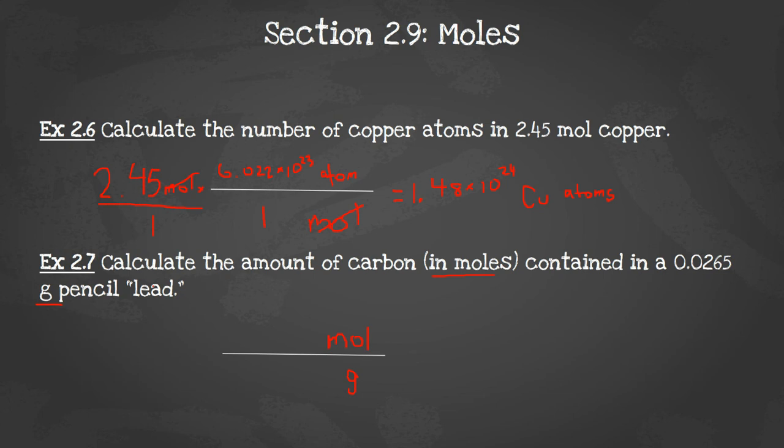We're not talking about actual lead, we're talking about pencil lead, which is graphite, which is a type of carbon. Let's write the number and the units that are given. Over here I have 0.0265 grams of carbon over 1. And in one mole of carbon there is 12.01. I got that number from the periodic table.